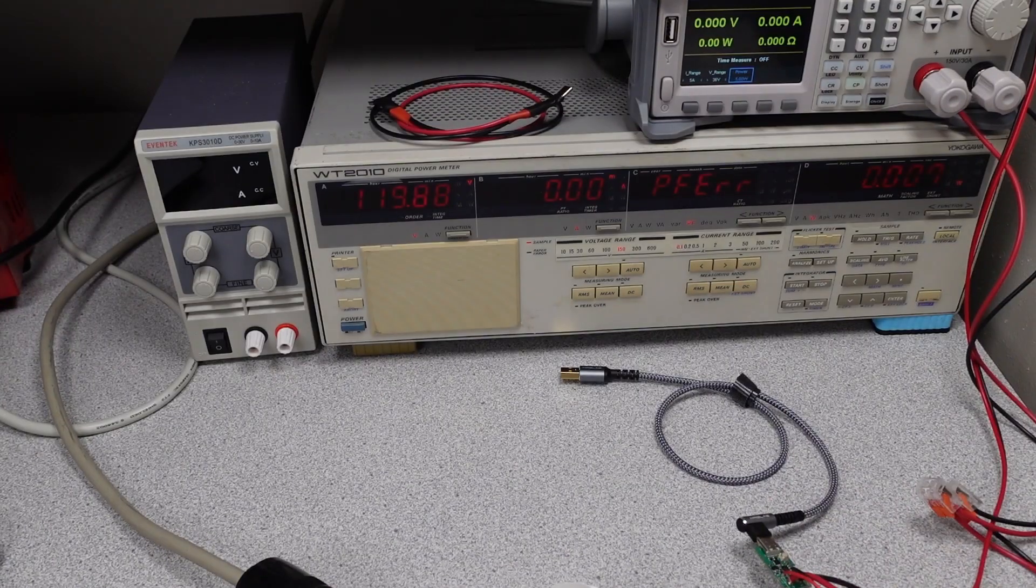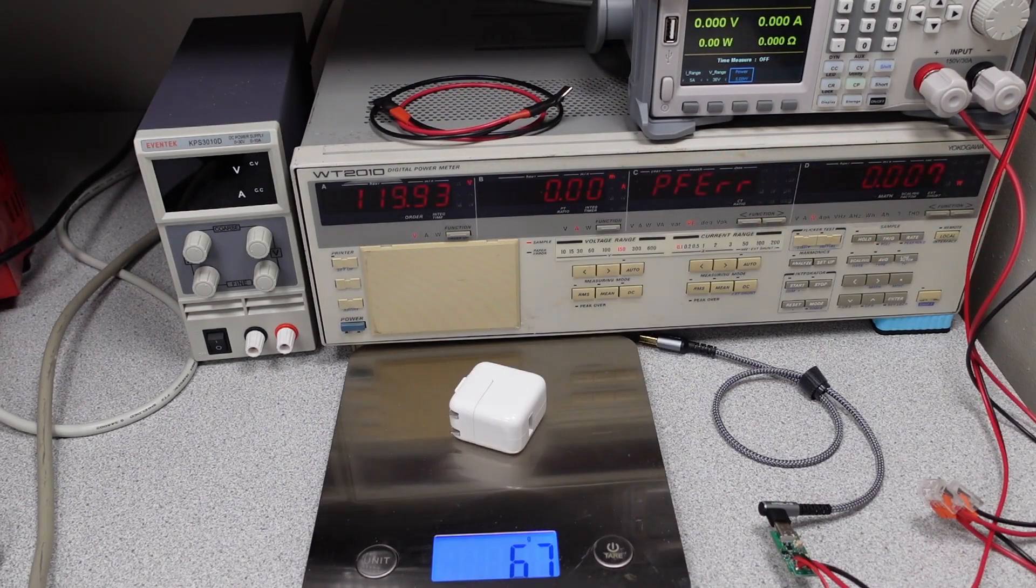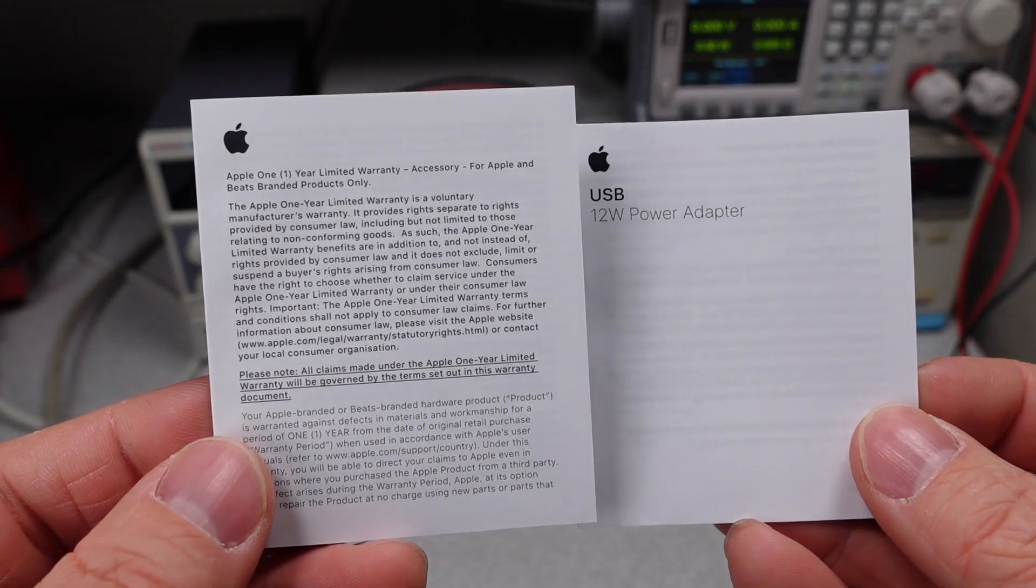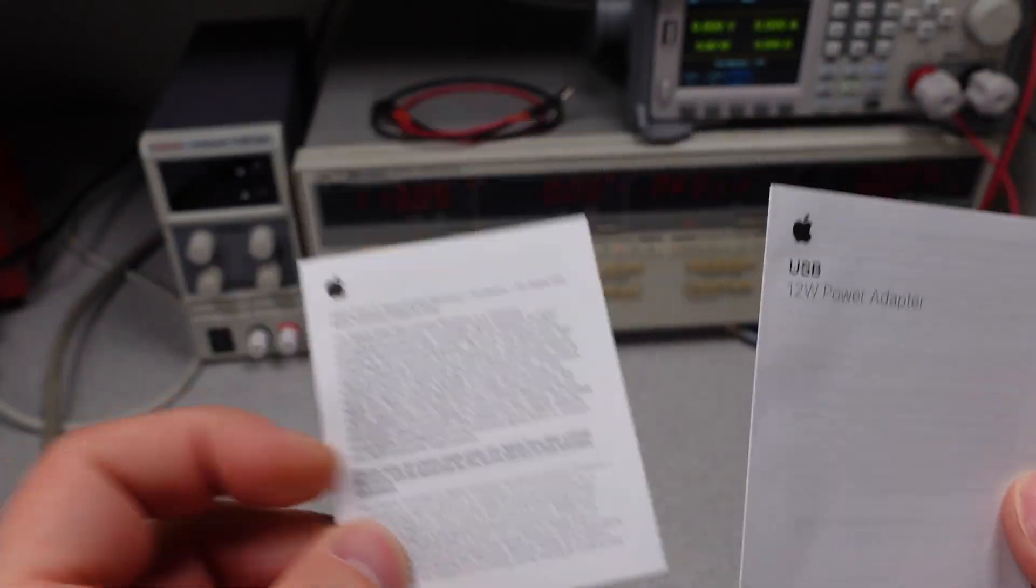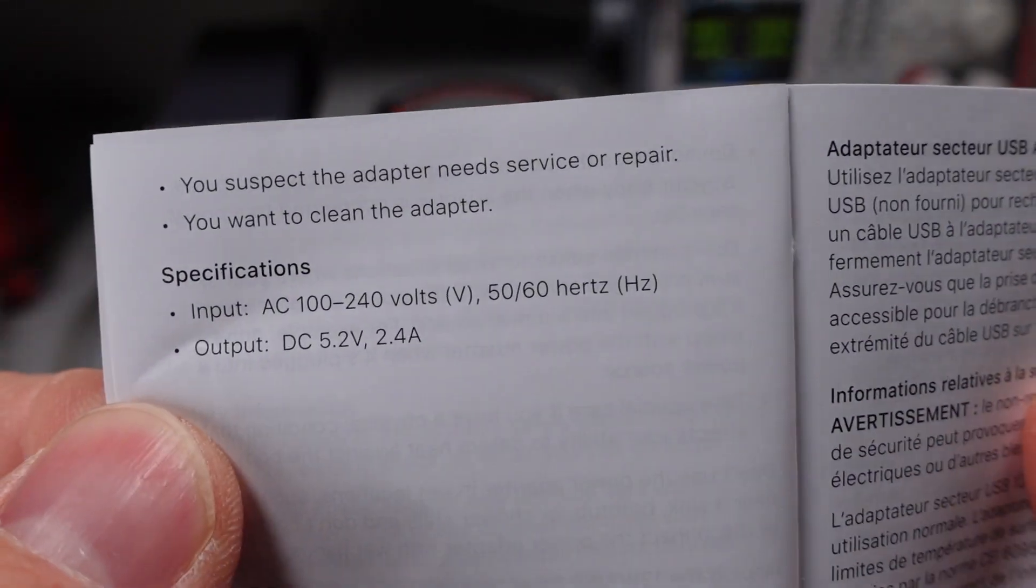All right, let's get some weights. The packaging weighed 22 grams. The power adapter weighs 67 grams. The Apple adapter comes with its little papers. You can see here what it can do for power delivery.